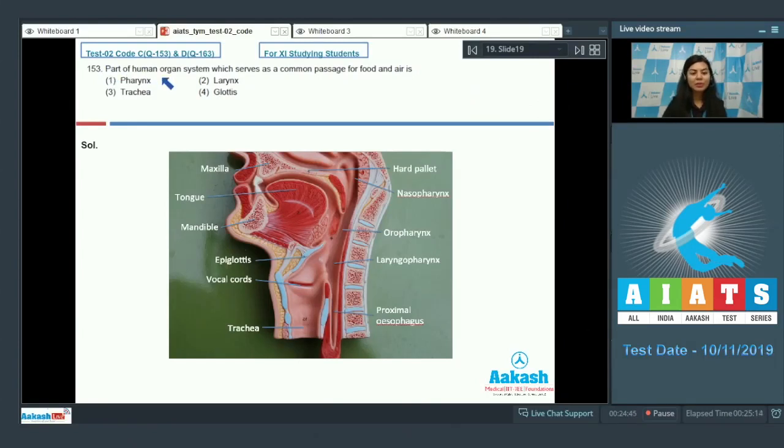Question 153: Part of human organ system which serves as a common passage for food and air is pharynx, larynx, trachea, or glottis. Students, if you look at this structure here, when the food is swallowed, the food is here, and this portion is the common portion.